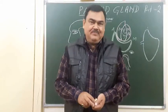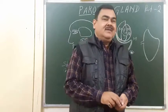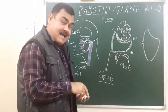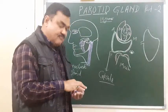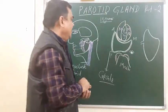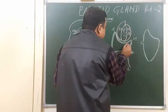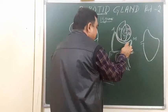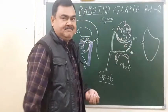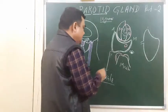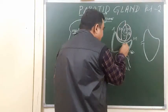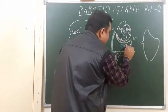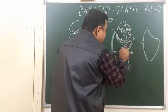Parotid gland part 2. In this section we'll discuss the structures within the parotid gland. The structures which lie within the substance of the parotid gland are arranged from medial to lateral. The medial-most structure is the external carotid artery, and just lateral to this is the retromandibular vein.